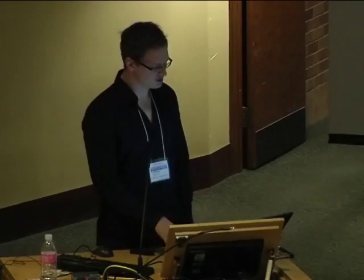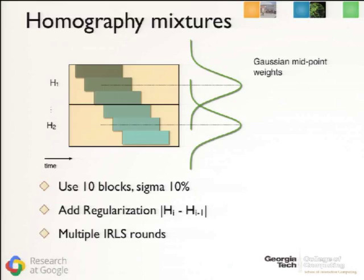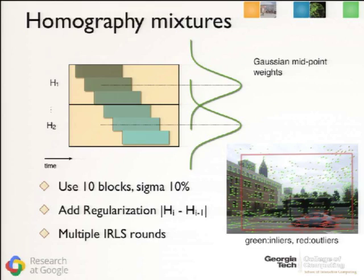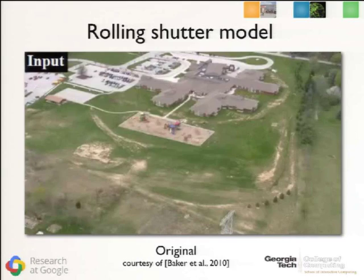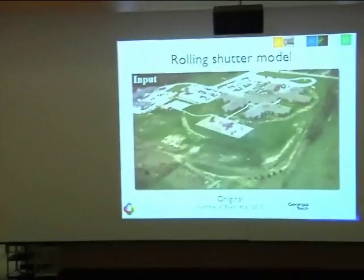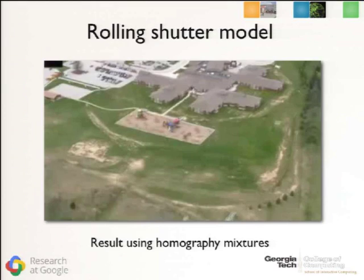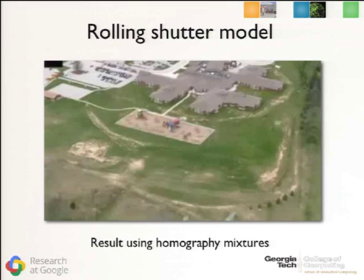Implementation details: 10 blocks across the image, sigma for Gaussian weights at 10% of frame height, and a regularizer for blocks with very few features. To discount foreground motions, we embed this in an iterative reweighted least squares scheme. Applying this model to the helicopter video, we nicely undo the rolling shutter distortions while the iterative reweighted least squares discounts the foreground motion.